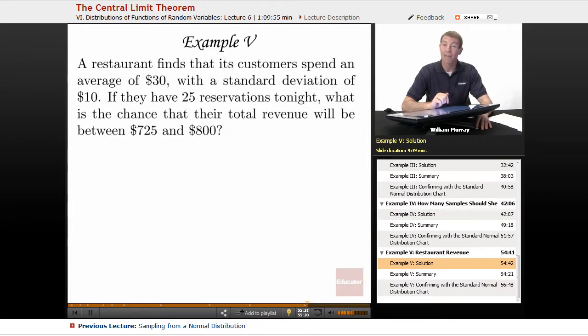So the restaurant, their average is $30 and they have 25 reservations tonight. I guess it's a reservation only restaurant. You can't just walk in here. You have to have a reservation. So they're expecting 25 customers tonight. They want to know the chance that their total revenue tonight. We're not worried about profit. We're not worried about what we're spending on supplies. Total revenue will be between $725 and $800.